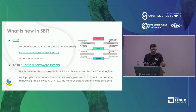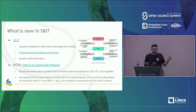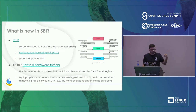SBI is still continuing to evolve. In the latest release, version 0.3, it added suspend to the hart state management, performance monitoring units (PMUs) for CPU statistics used by tools like perf, and a system reset extension — so rather than platform-specific ways to do a reset, the kernel can now say 'do a system reset' and SBI handles implementing that.